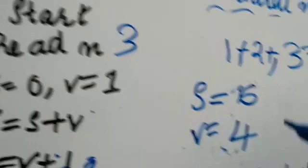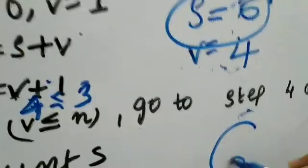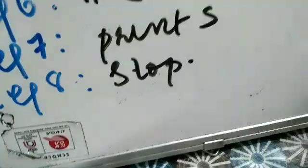what is our current s? Our current s is, s equals 6. So, I am going to print 6. Then stop. Last step, stop.